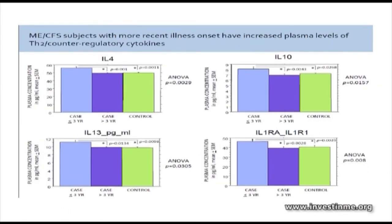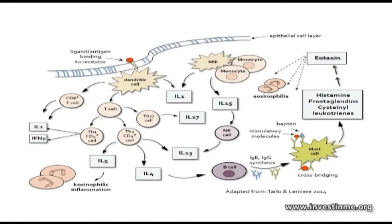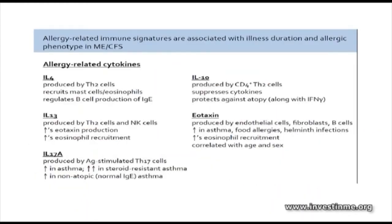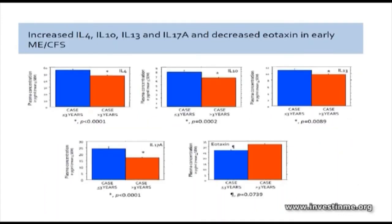Short-duration subjects also have so-called TH2 or autoimmune subtype cytokines — IL-4, IL-10, IL-13, and also this IL-1 receptor antagonist. We were very interested because many of the cytokines that came up in our broad panel were suggestive of an allergic phenomenon. There are many cross-reactions there. It has been speculated in the past, and there are some findings suggesting the presence of allergic disorders, particularly in fibromyalgia subtypes of ME but also in other subtypes.